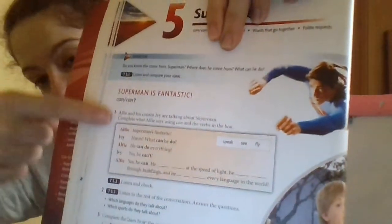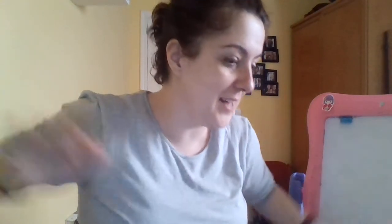Where is he from? Krypton, yes. Let's look at Activity 1. Alfie and his cousin Ivy are talking about Superman. Complete what Alfie says using can and the verbs in the box. We have the verb speak, to see, and to fly. Let's listen to Alfie and Ivy.